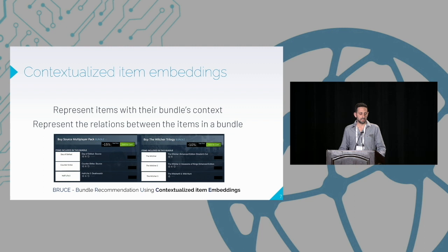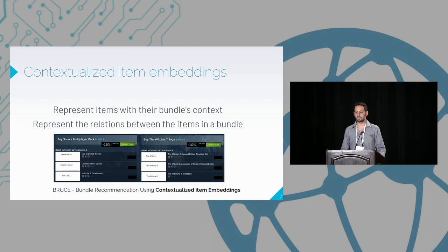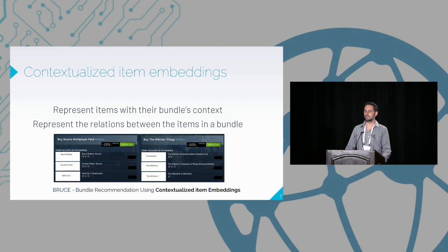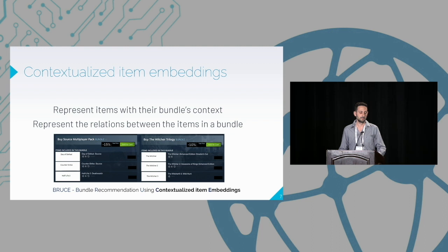As for the other part of the title, contextual items embedding — don't be misled, it's not context features. We aim to represent an item's contextual representation within the bundle, meaning items will have different relationships with other items in a bundle. For example, in the gaming domain on the Steam dataset, some bundles are sequential like Witcher 1, 2, and 3, while others consist of the same genre like fantasy. We want to leverage this interconnection between different items in the bundle.